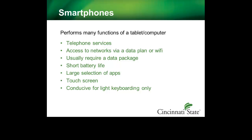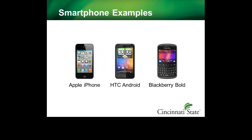Smartphones perform many desktop computer functions. They store confidential college information in files, emails, etc. Characteristics of a smartphone include telephone services, access to networks, data plan or Wi-Fi (usually require a data package), short battery life, large selection of apps, touch screen, and conducive for light keyboarding only. The Apple iPhone, HTC Android, and BlackBerry Bold are examples of smartphones.